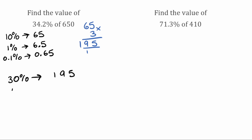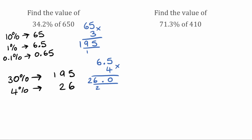In our units column we need 4%. To find 4%, we take our 6.5 and multiply that by 4. So 4 times 5 is 20 — 0, carry our 2; then 4 times 6 is 24, add on our 2 gives us 26. So our 4% is equivalent to 26. Then finally in our tenths column we need 0.2%. We know 0.1% is 0.65, so we multiply that by 2.